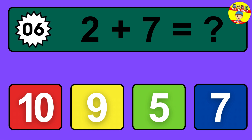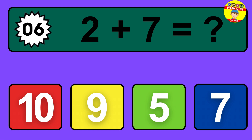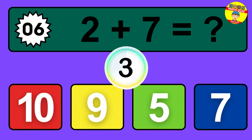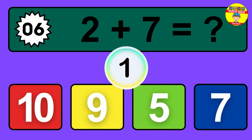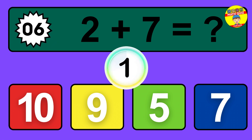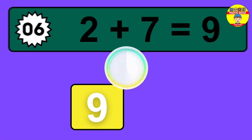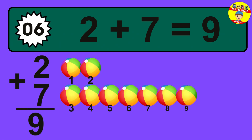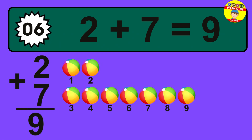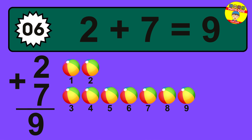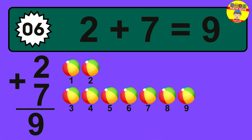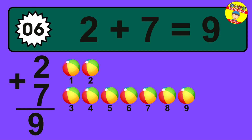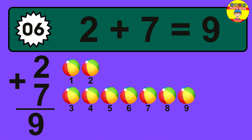Question 6. 2 plus 7 equals what? The answer is 2 plus 7 is 9. Let's count it: 1, 2, 3, 4, 5, 6, 7, 8, 9.